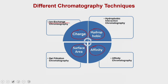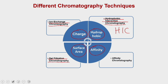For charge, people use ion exchange chromatography. For hydrophobic patches, people use hydrophobic interaction chromatography or HIC. For surface area, people use gel filtration chromatography or gel permeation chromatography. And for affinity, depending on the protein and its affinity parameters, you can use affinity chromatography. In today's lecture, we are going to start our discussion about ion exchange chromatography.